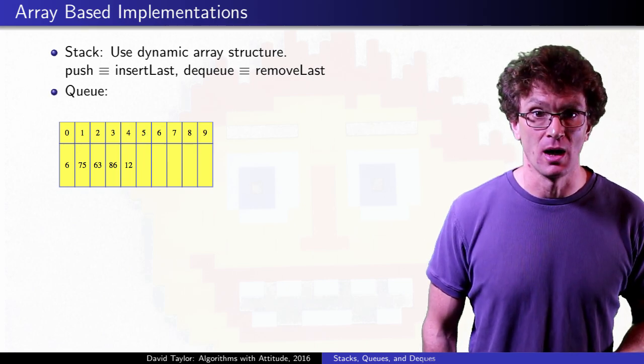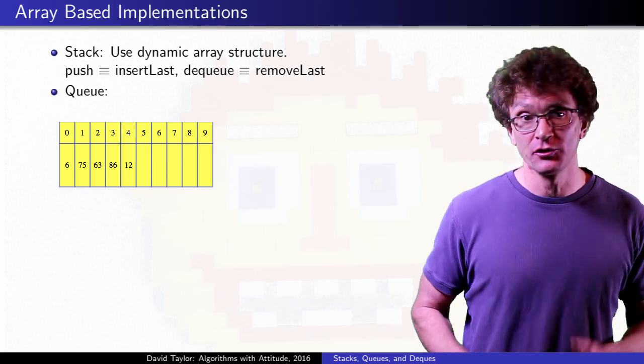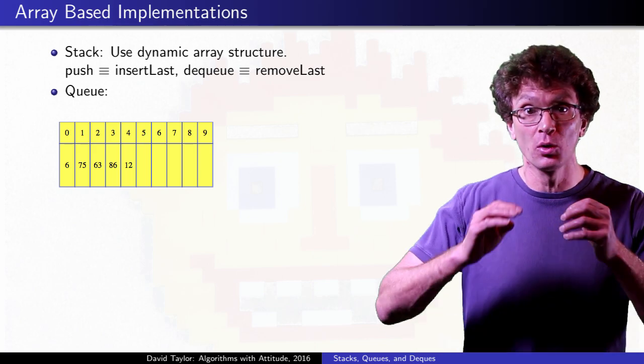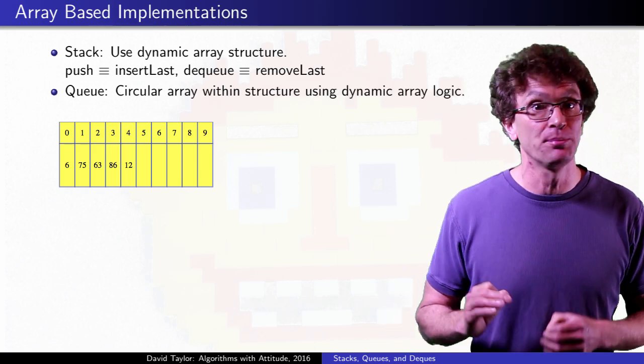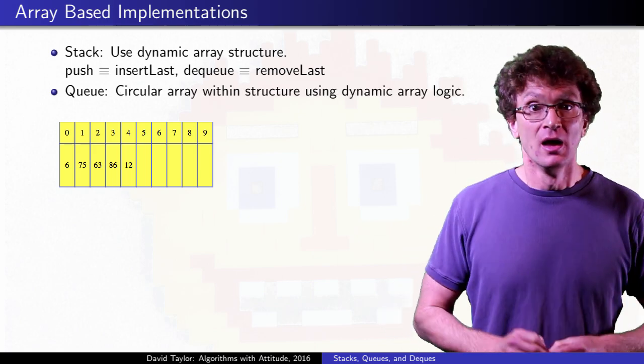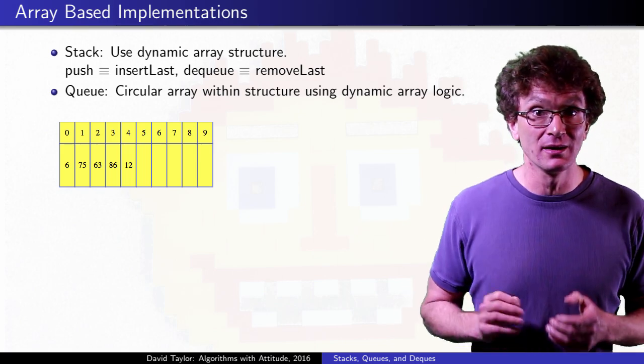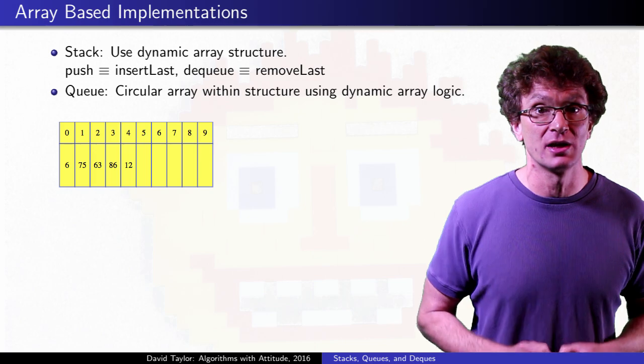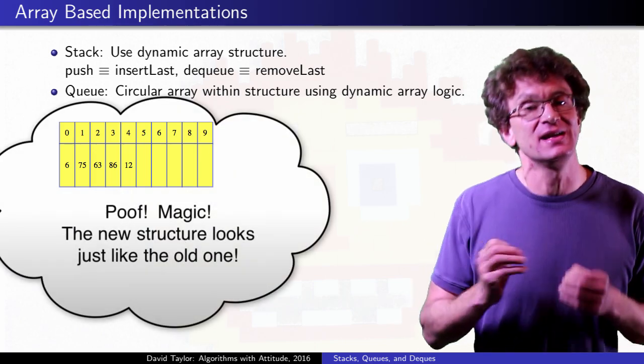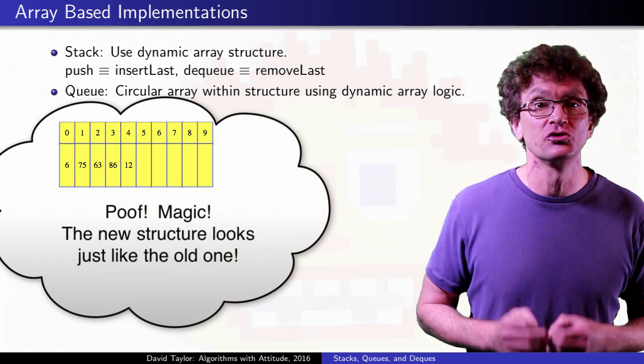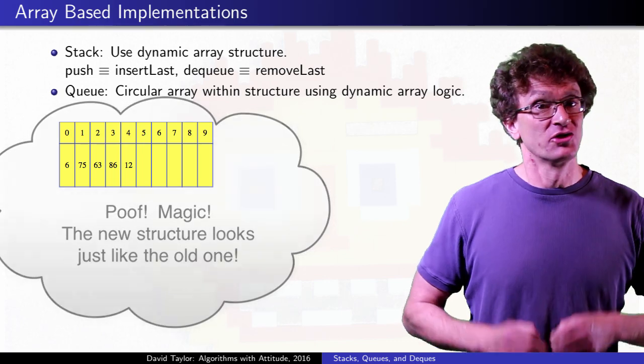Now, for queues, things get a bit more complex. There might be a few different array-based approaches, but I'm going to use circular arrays. They're simple and elegant, but still efficient. Instead of using a prepackaged dynamic array, like ArrayList, we instead build a new data structure from arrays, but we use the same ideas and analysis that were used to build dynamic arrays.